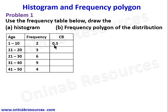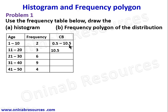So the lower class boundary of the first class interval is 0.5. For the upper class boundary we find the midpoint of 10 and 11: 10 plus 11 equals 21, divided by 2 gives 10.5. So the upper class boundary is 10.5. For the next class interval, 20 plus 21 equals 41, divided by 2 gives 20.5 — that is the upper class boundary of the interval 11 to 20.